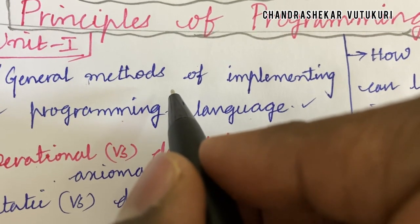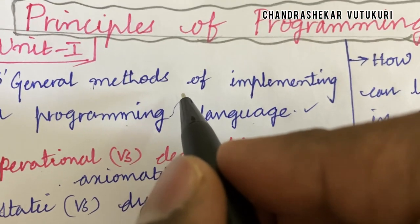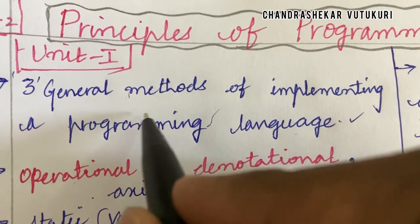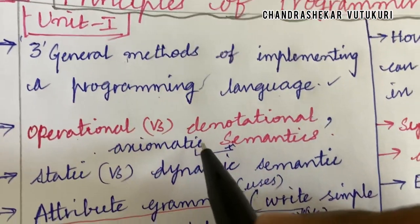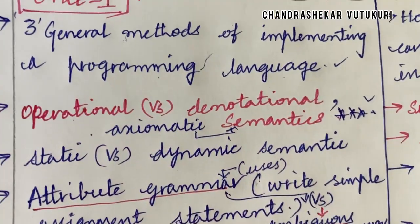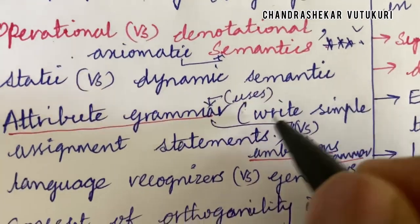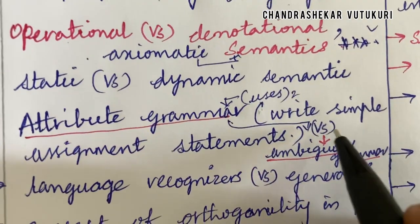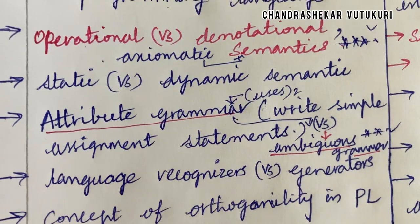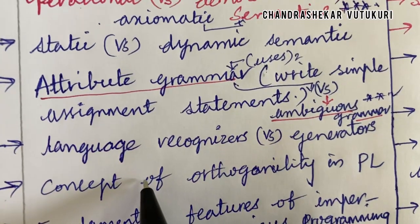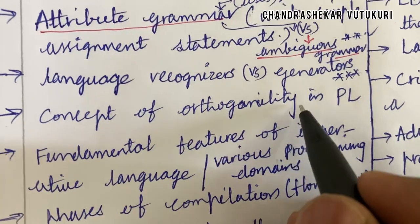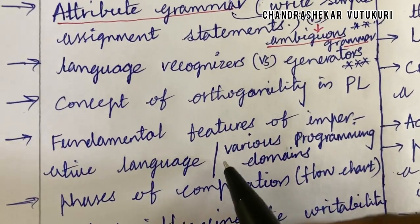Dear students, as I am putting in a lot of effort and time making these questions, I will be enabling certain important questions only for members. For Unit 1, I am going to cover: the three general methods of implementing a programming language; operational versus denotational versus axiomatic semantics as a top short question; static versus dynamic semantics differences; attribute grammar and its use; simple assignment statements; attribute grammar versus ambiguous grammar; language recognizers versus generators; the concept of orthogonality; fundamental features of imperative languages; and the various programming domains.